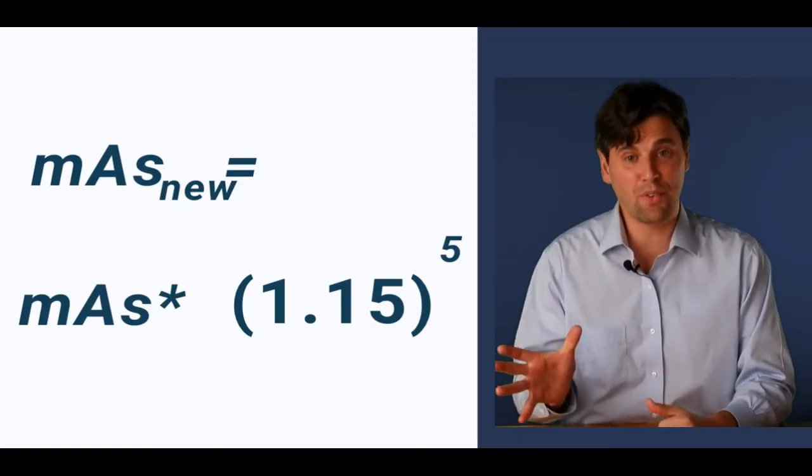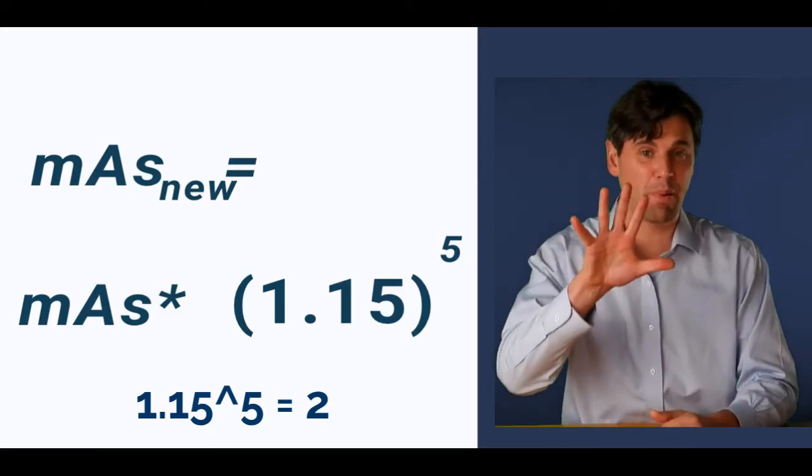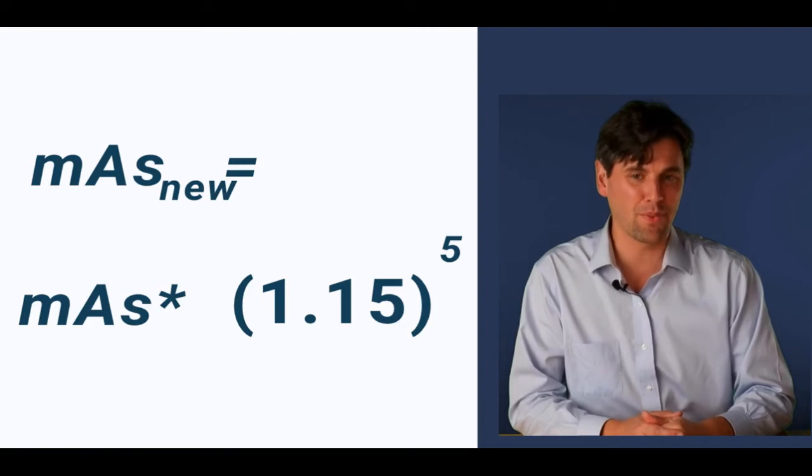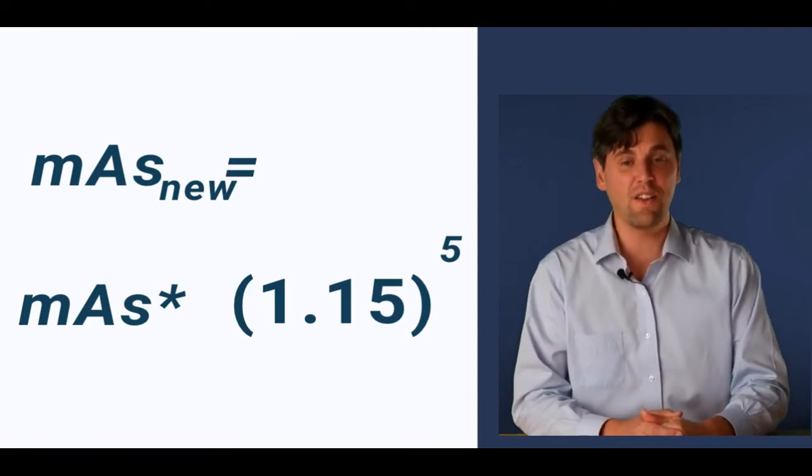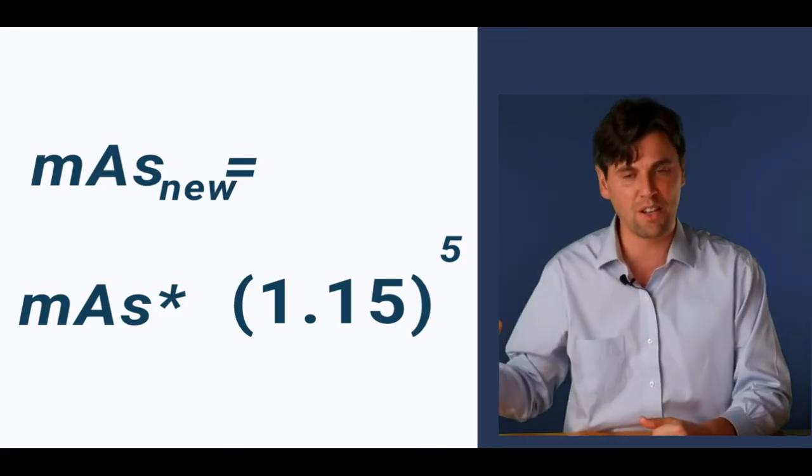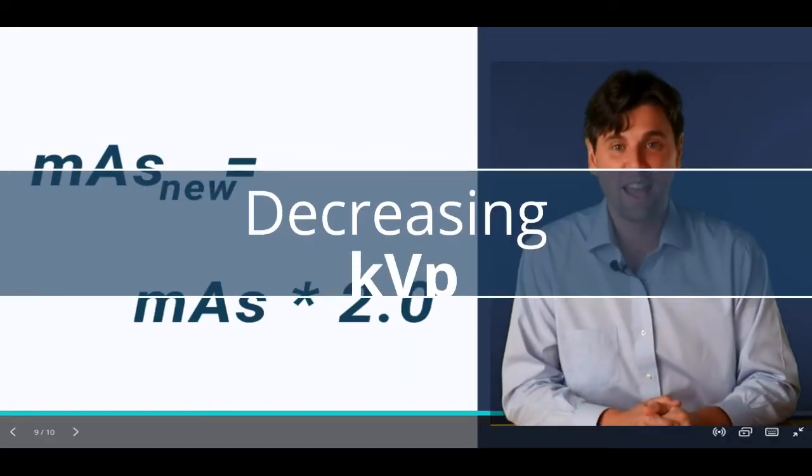1.15 is a 15% change. And if you think about 1.15 raised to the fifth power is actually 2. That's where your 15% rule comes from. The fact that KVP is very strongly an influence on both the x-ray generation and the x-rays that actually penetrate the patient. It's as simple as that.